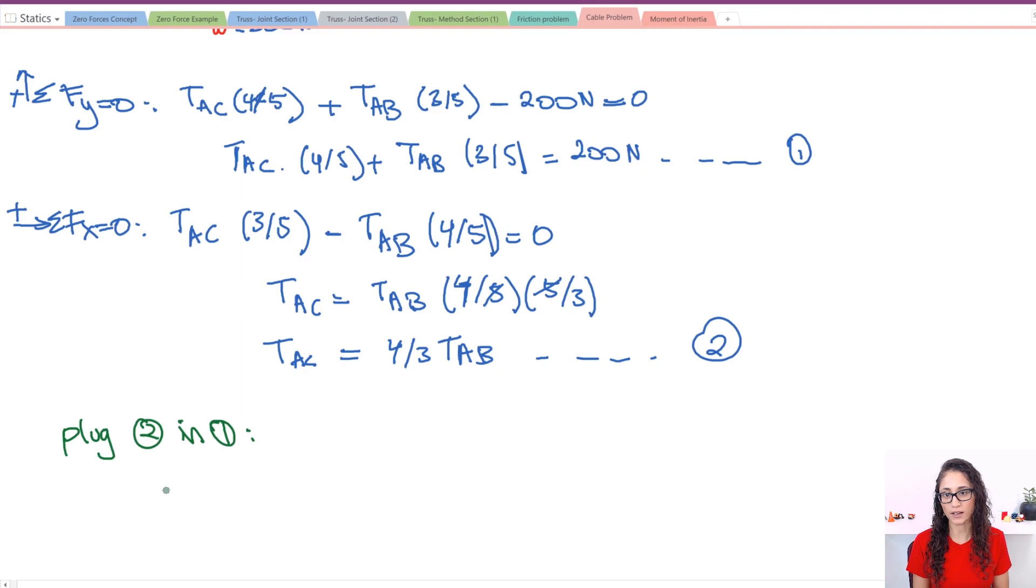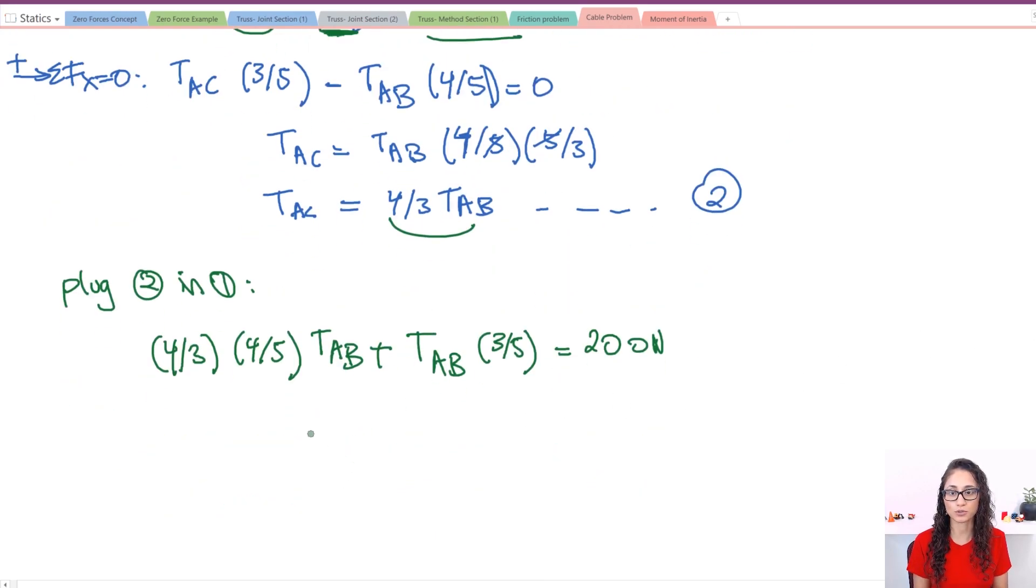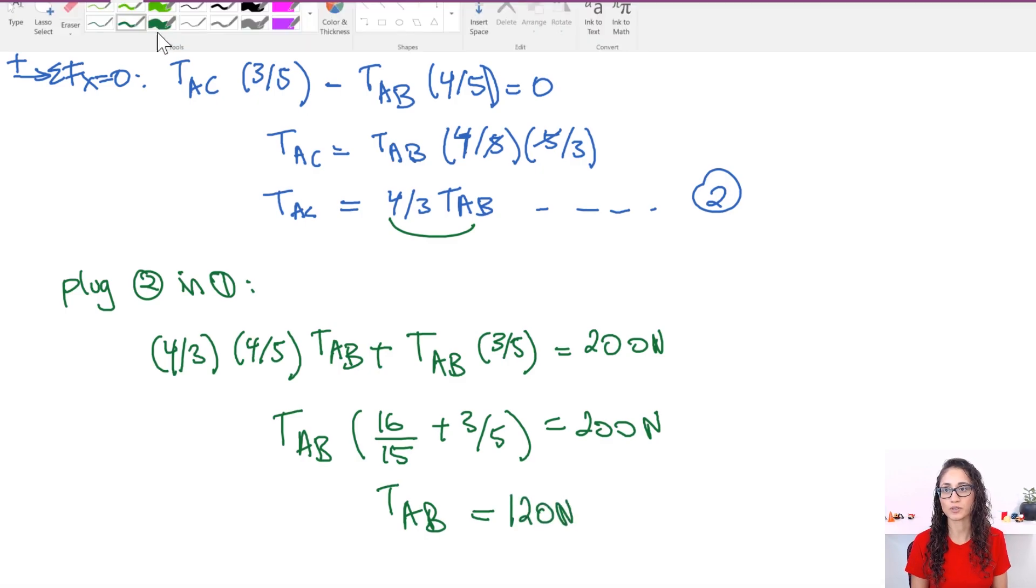Now all we need to do is plug in two into one. So I have four over three times four over five TAB—I'm taking this term and substituting it here for TAC, but I'm keeping this term, so don't forget it. I have four over five. Now I'm going to do plus TAB three over five—nothing changed there—and this equals 200 newtons. Now I have only one unknown. All I need to do is rearrange the equation. So I'm going to do four times four, that's 16, divided by five times three, which is 15, plus three over five equals 200 newtons. So TAB is going to equal 120 newtons. That's your answer.